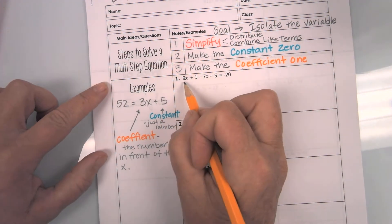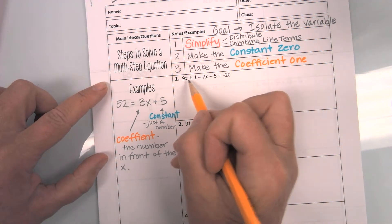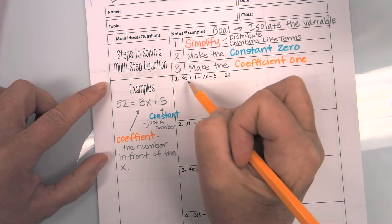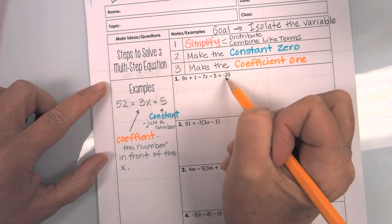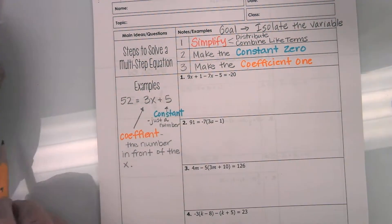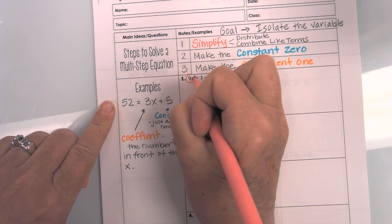Okay, let's look at number one. Number one does look messy because it does have a lot of numbers. Now, the first thing that we need to do is simplify. I always distribute first, and notice there are no parentheses, so I'm not going to distribute. But I do have to combine like terms. So, I'm going to come in here and take a look at what is the same that I can put together.